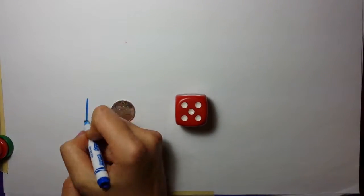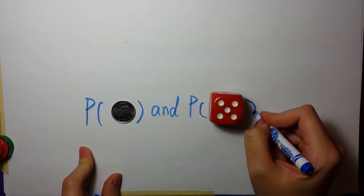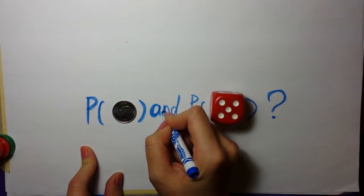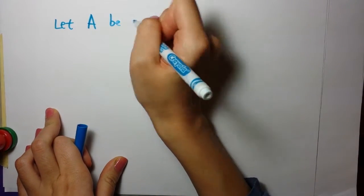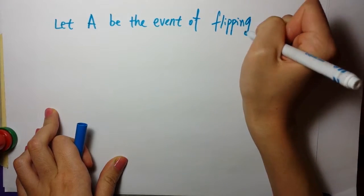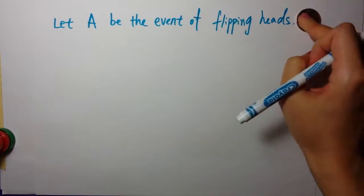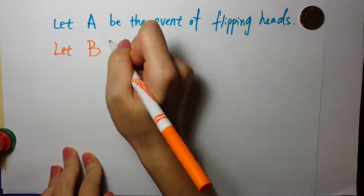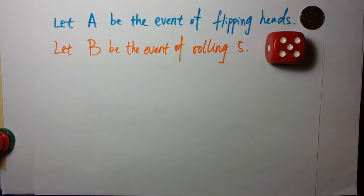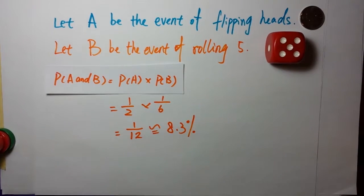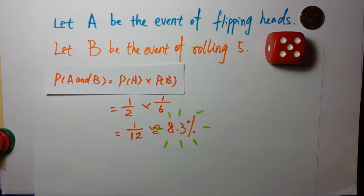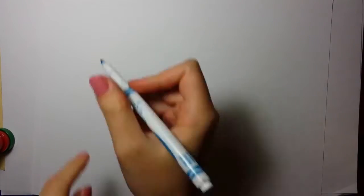Here's an example. A coin is flipped while a die is rolled. What is the probability of flipping heads and rolling five in a single trial? Two independent events occur in a single trial. Let A be the event of flipping heads and B be the event of rolling five. The notation P(A and B) represents the compound or joint probability that both events A and B occur simultaneously. Using the formula P(A and B) equals P(A) times P(B), which equals 1 over 2 times 1 over 6 is equal to 1 over 12, approximately 8.3%.